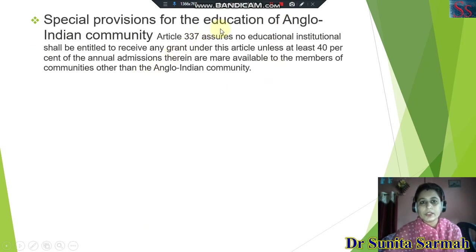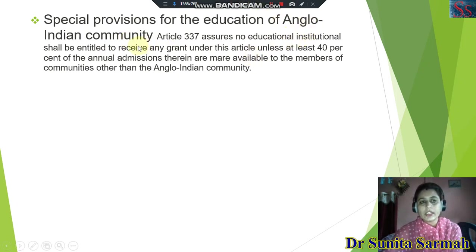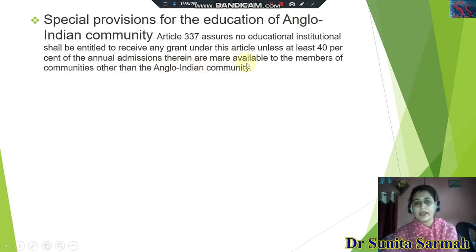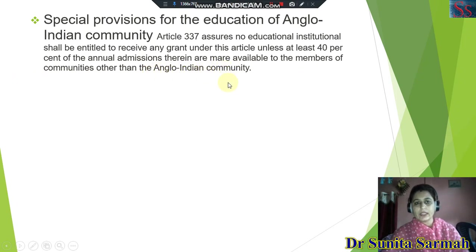There are special provisions for the education of the Anglo-Indian community, with the condition that at least 40 percent of the annual admissions therein are made available to members of communities other than the Anglo-Indian community.